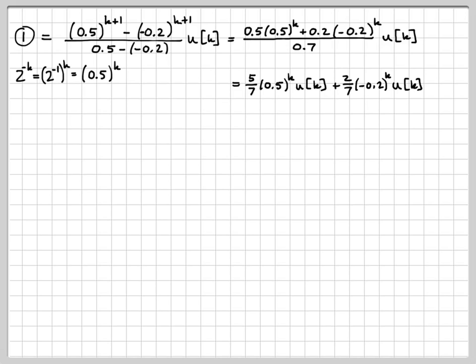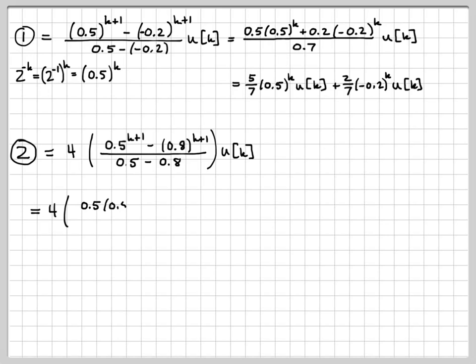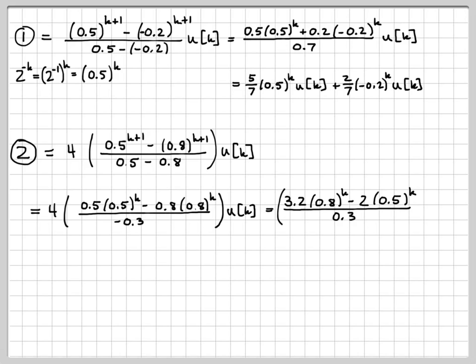And we can do a similar thing for term 2. Term 2, using our table result, we can write like this. If I factor things out a little bit, I can write that as (3.2(0.8)^k - 2(0.5)^k)/0.3. You notice I've just multiplied by -1 in numerator and denominator to flip the order of the subtraction there. And 3.2/0.3 is 32/3, and 2/0.3 is 20/3. So I can write term 2 like this.